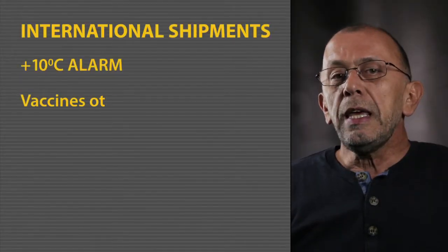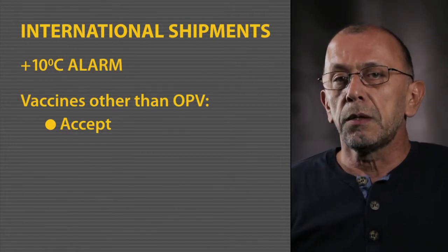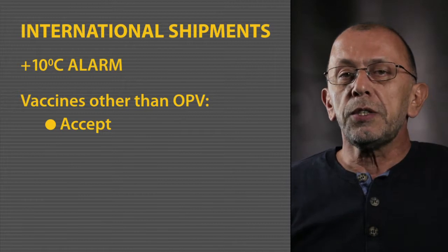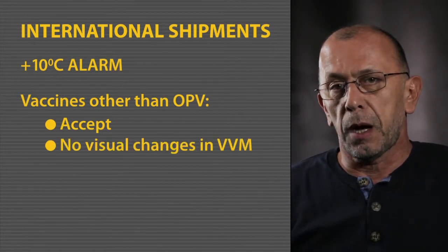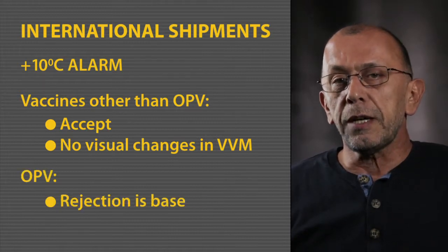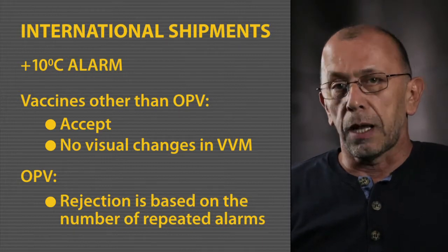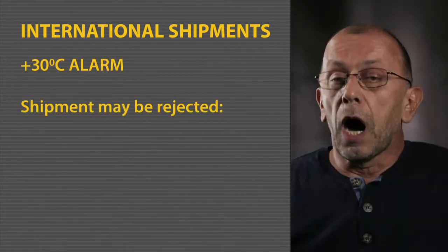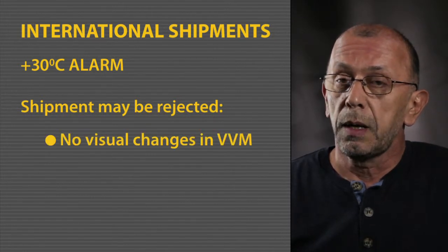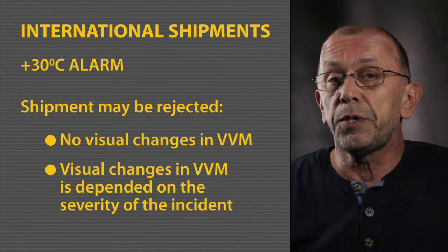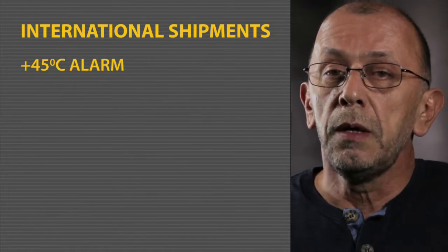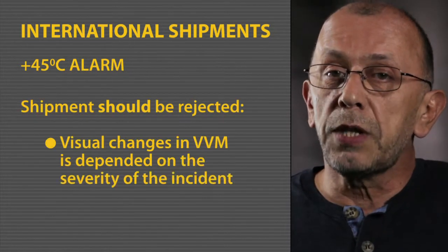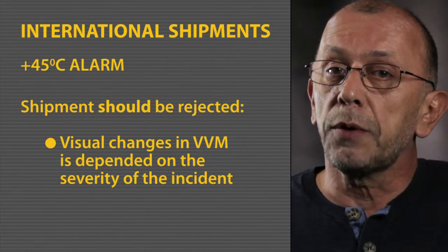The alarm of 10 degrees Celsius for more than 20 hours is important only for oral polio vaccine (OPV) shipments. If the shipment contains vaccines other than OPV, the shipment should be accepted. With such an alarm, we do not expect any visual changes in the VVM color. In the case of OPV, rejection should be based on the number of repeated alarms. In the case of a 30 degrees Celsius alarm for more than 10 hours, the shipment may be rejected; however, we do not expect any VVM changes with one alarm — changes would depend on the severity of the temperature excursion. In the case of a 45 degree alarm, the shipment should be rejected, and VVM color change would depend on the severity and number of repeated alarms.